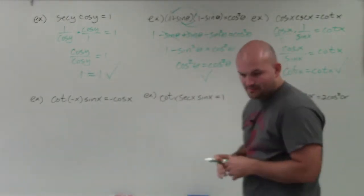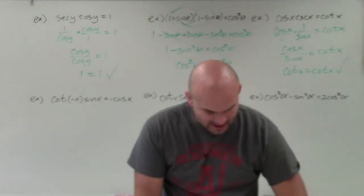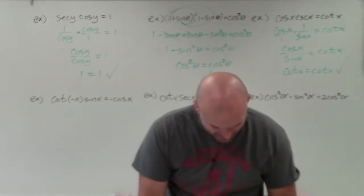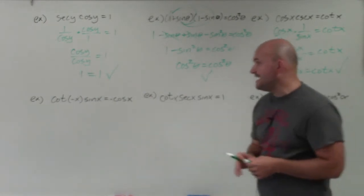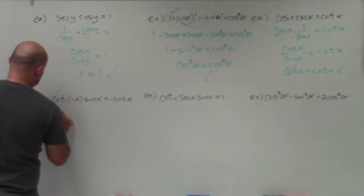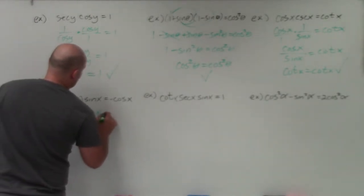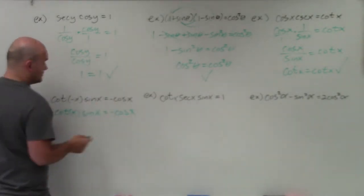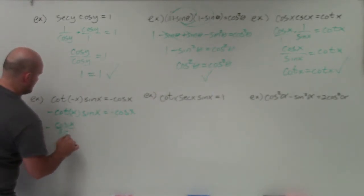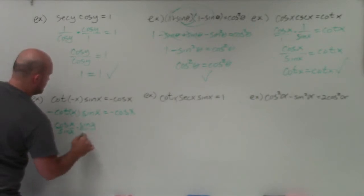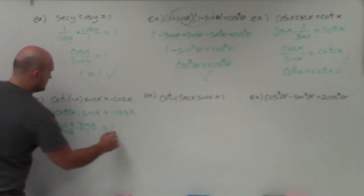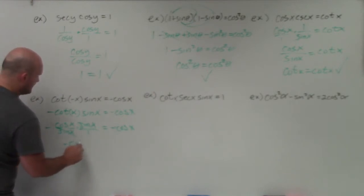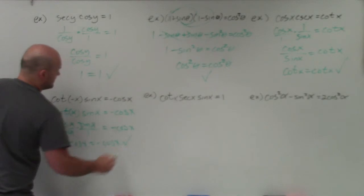In the next example, we have a little bit of even and odd identities. We want to make sure we use not only Pythagorean identities but also even and odd identities. We have cotangent of negative x, which we rewrite as negative cotangent of x, times sine of x equals negative cosine of x. Rewriting in terms of sines and cosines — cotangent equals cosine over sine — we get negative cosine of x over sine of x times sine of x over 1. The sines cancel, leaving negative cosine of x equals negative cosine of x. Verified.